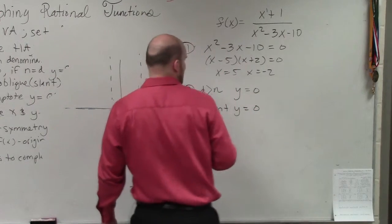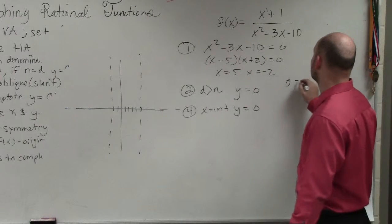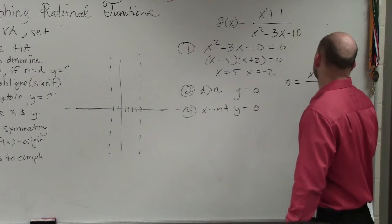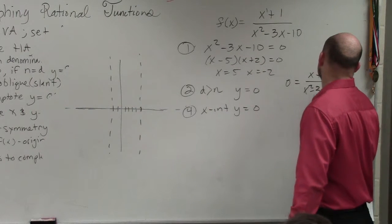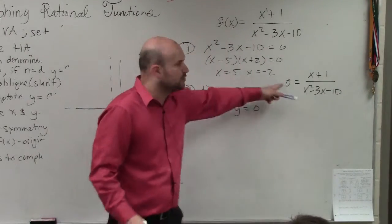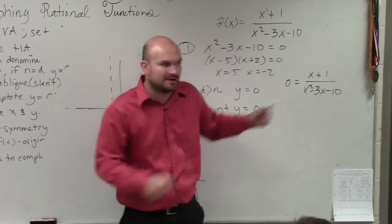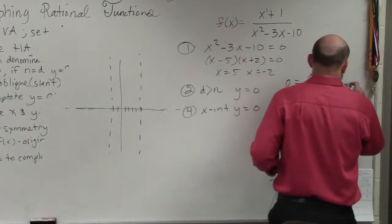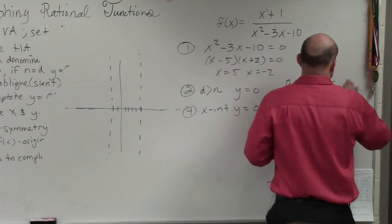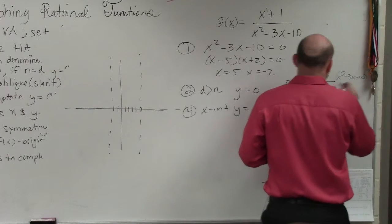So to determine the x-intercept guys, you just put zero in for y, or in this case, f of x. To find the x-intercept, you plug zero in for y. How do you solve for this? You've got to get rid of this in the denominator, right? So to do that, multiply x squared minus 3x minus 10 on both sides.